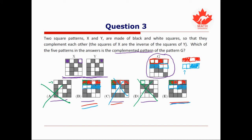Both B and E have the same third row, so we can't tell them apart from that. But the bottom row of B is different from the bottom row of E. Looking at the bottom row of G, the first three squares are not filled in and only the last one is filled in. That means the opposite — what we're looking for — is to have the first three squares all filled in and only the last square not filled in. We see that's not happening in B, so our answer has to be E. It has exactly what we're looking for.